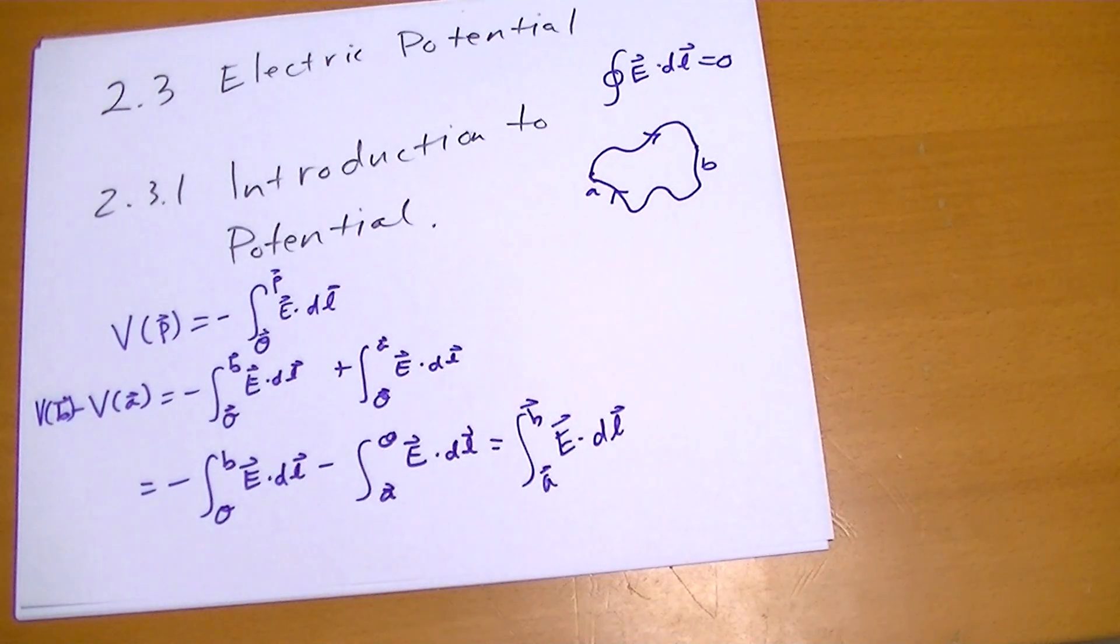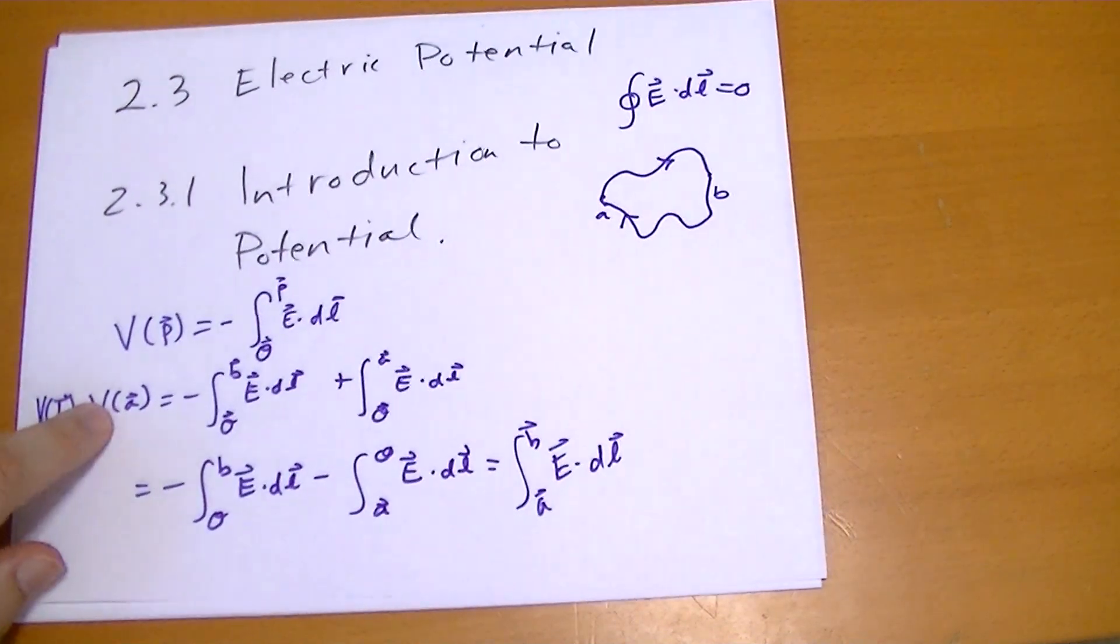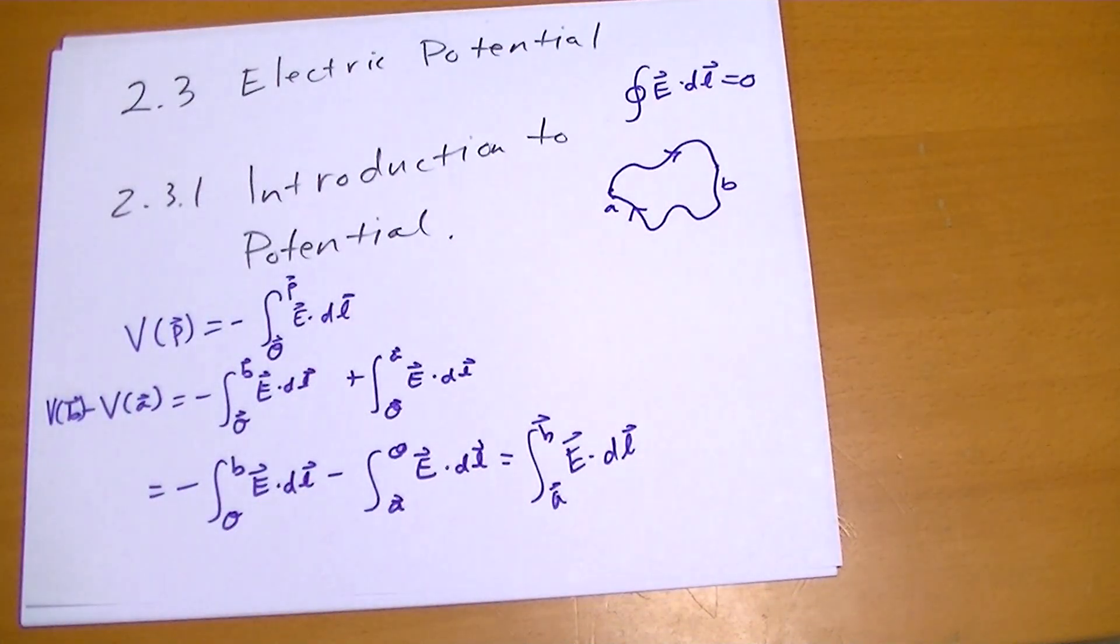So in many ways, the origin point that we use is not important. If you're just calculating the potential difference between two points, it just falls out. It doesn't matter what point you choose, you don't have to even choose a point.